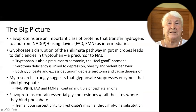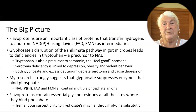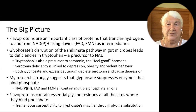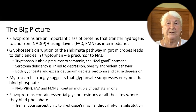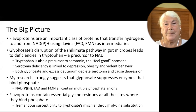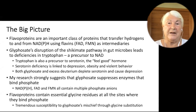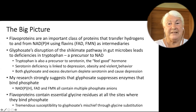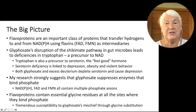Flavoproteins are an important class of proteins that transfer hydrogens to and from NADPH using flavins — FAD and FMN — as intermediaries. They bind to both FAD and NAD or NADP. Glyphosate's disruption of the shikimate pathway in gut microbes leads to a deficiency in tryptophan, one of the aromatic amino acids. Tryptophan is a precursor to NAD, so it becomes deficient if microbes can't make enough. Tryptophan is also a precursor to serotonin, the feel-good hormone — linking glyphosate to depression, and possibly to violent behavior through serotonin deficiency connected to excess deuterium.